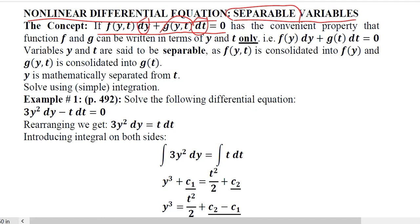If we have such an equation where the differentials of y and t are being multiplied with a function both in terms of y and t, then it can be rewritten in a way that has a convenient property. It is possible to write it so that f will be in terms of y only and g will be in terms of t only.